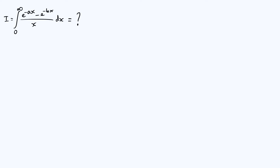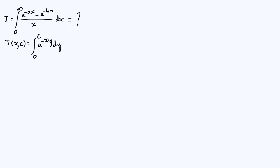The first thing I'm going to do is define another related integral which we'll use as part of our solution. I'll call this other integral J, and it's a function of two parameters x and c. So J(x, c) is defined to be the integral from 0 to c of e^{-xy} with respect to y.